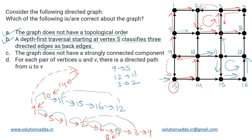Coming to option C: 'the graph does not have a strongly connected component.' We saw three different cycles in this graph, each of size 4, and each of these cycles represents a strongly connected component. So this graph does have strongly connected components — that statement is incorrect.